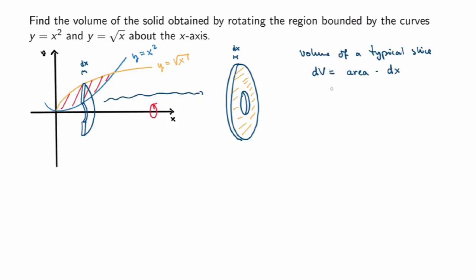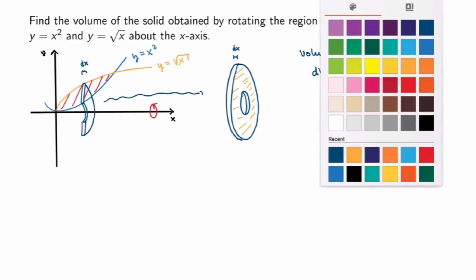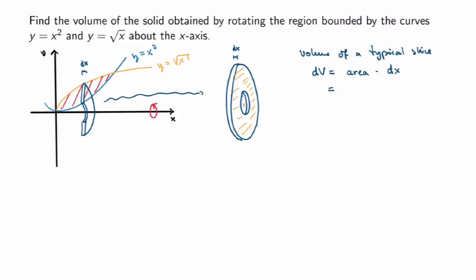I need to calculate this area, but it's basically a washer — a big disk with a hole in the middle removed. To calculate the area, I'll first calculate the area of the big disk with radius r_outer, and then remove the area of the hole with radius r_inner. So the area equals π·r_outer² minus π·r_inner², and multiplying by dx gives me dv.